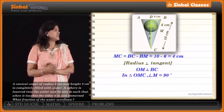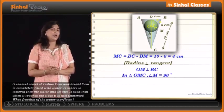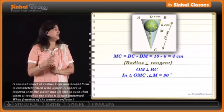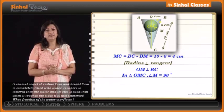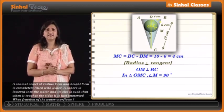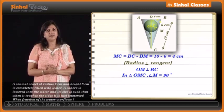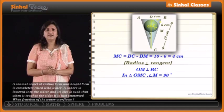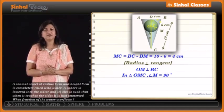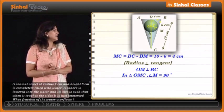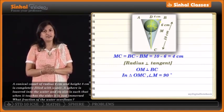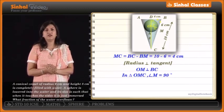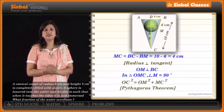We know MC as 4 cm and OM is the radius. OC will be CD minus OD — CD is the height, 8 cm, and OD is the radius R — so OC = 8 − R. Using triangle OMC with angle M = 90°, we can find the radius by applying Pythagoras' theorem.